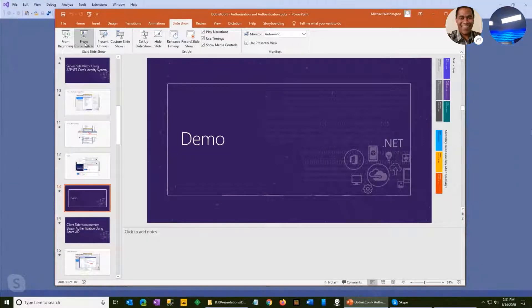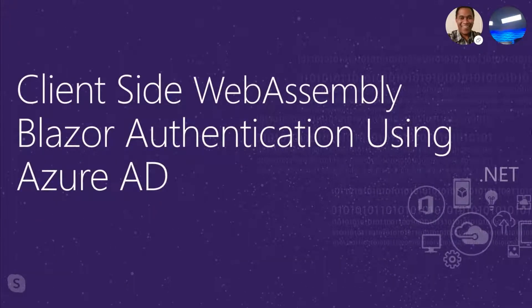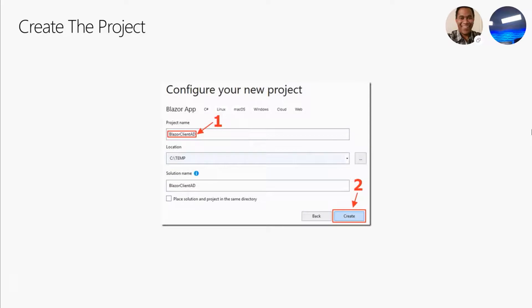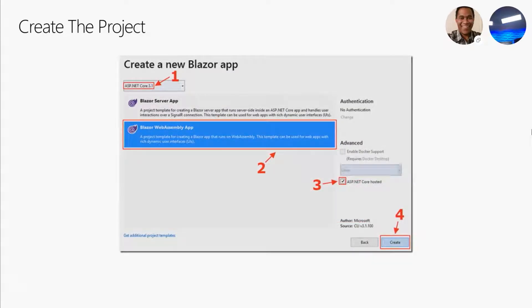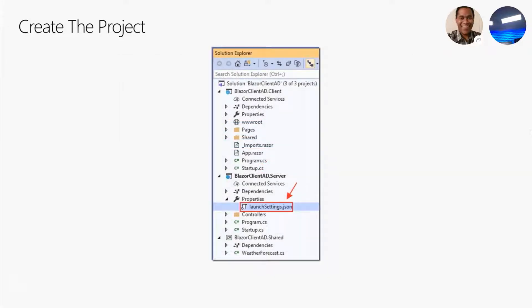Now we'll look at client-side authentication using Azure AD. Again, create a new Blazor app in Visual Studio, give it a name, but this time check Blazor WebAssembly app. If you don't see this template, go to blazor.net and follow the directions to install it. Ensure that ASP.NET Core hosted is selected and create the solution — which creates three projects: a client project running in the browser, a server project running server-side code, and a shared project with components shared between both.